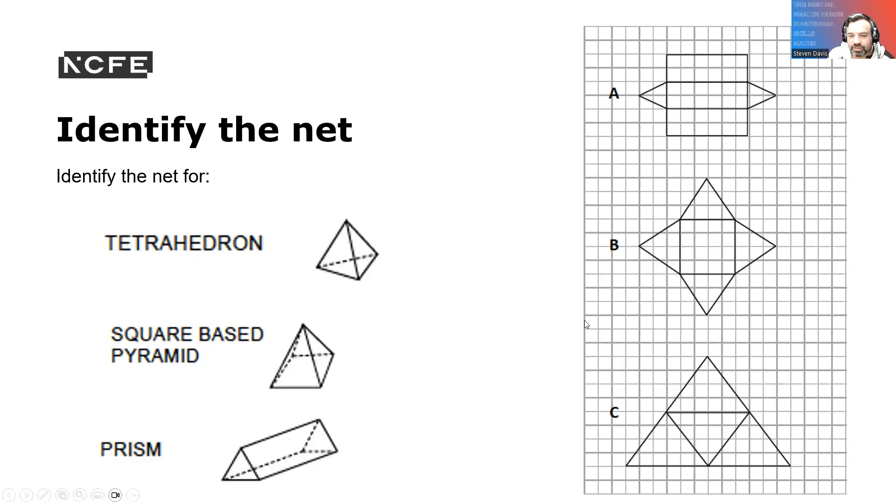So you now need to identify the different nets here. Which one would make this one? So C. Your square base prism would be B surely, and then your prism would be A. You could just see that by the base, right?